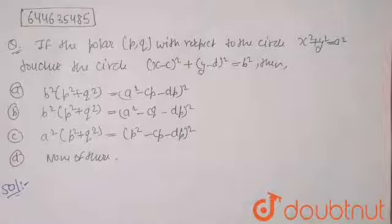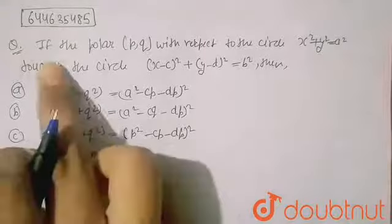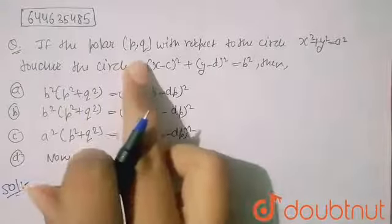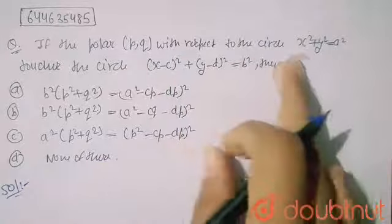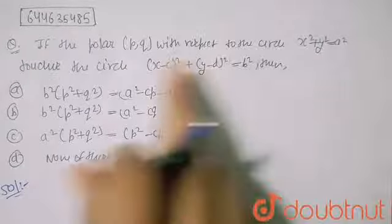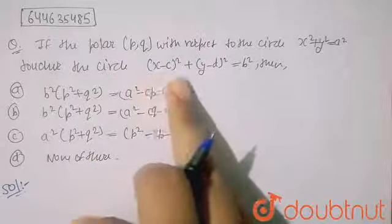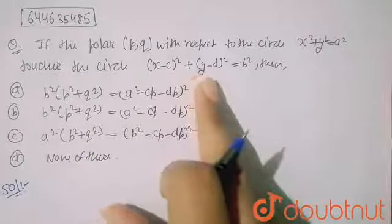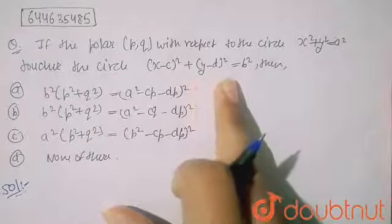Hello friends, so in this question it is given if the polar P,Q with respect to the circle X² + Y² = A² touches the circle (X-C)² + (Y-D)² = B².